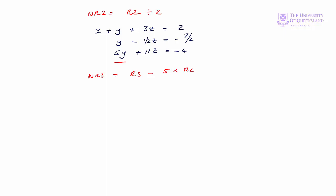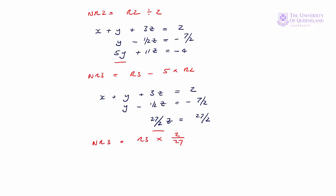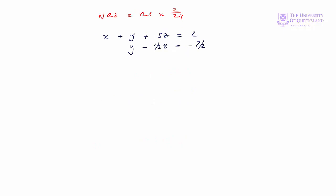New row three equals row three minus five times row two. Equations one and two remain unchanged. We have five y minus five y giving zero y. We have eleven z minus five times minus one half z, so we'll be adding five on two times z to eleven z, giving us 27 on two times z. On the right hand side we have minus four minus five times minus seven on two, which also gives us plus 27 on two. A final step is to get a one as coefficient for z in the third equation by multiplying equation three by two on 27. Equations one and two are the same; for equation three we'll have z equals one.